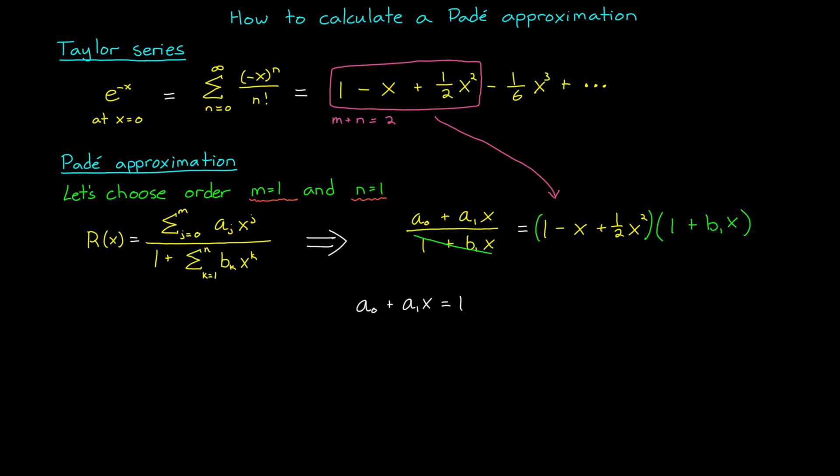Since both the numerator and denominator are order 1, then we would equate this rational polynomial to a second order Taylor polynomial. To solve this, we multiply both sides by the denominator, and then we get this equation. Then to solve for the coefficients, we can look at each of the x terms individually. We'll start with x to the 0. We're looking for terms without any x's in them. On the left side, we have a 0, and on the right side, we have 1. So a 0 equals 1. Now we move on to x raised to the power of 1. On the left side, we have a 1, and on the right side, we have negative 1 plus b 1. Let's move on to x squared. On the left side, we have 0, and on the right side, we have 1 half minus b 1. So this makes b 1 equal to 1 half. And then if we use this in the equation above, we can solve for a 1 equals negative 1 half.